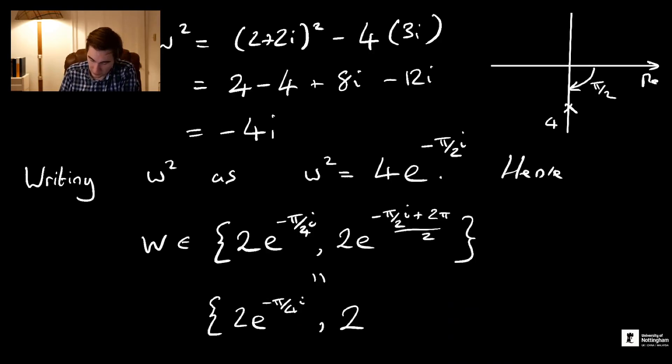We can write that set as 2e^(-iπ/4) and 2e^(3πi/4). Here we've got -π/2 + 2π, which is 3π/2, so the overall thing is e^(3πi/4). So our two values of w are this value and this value.